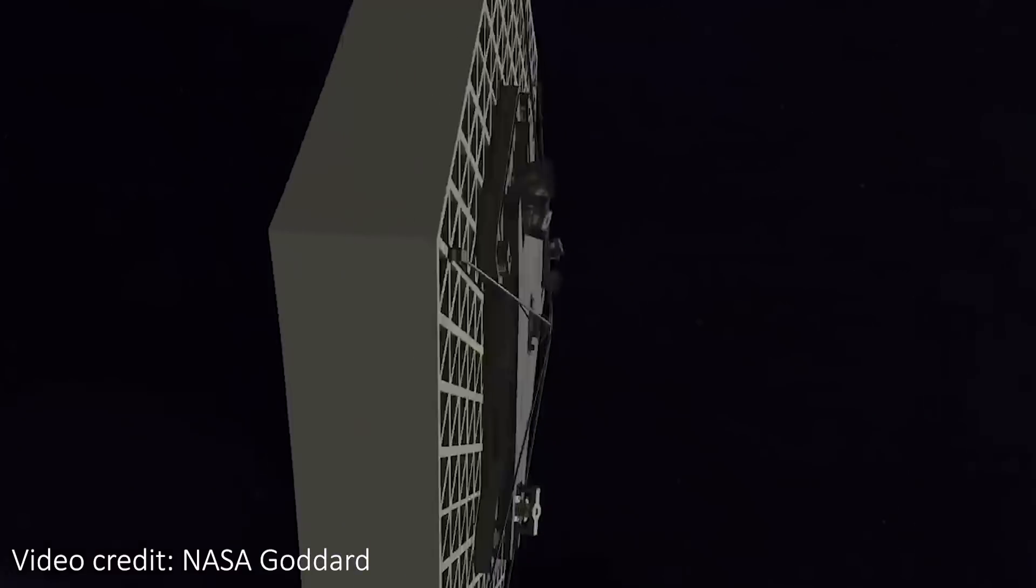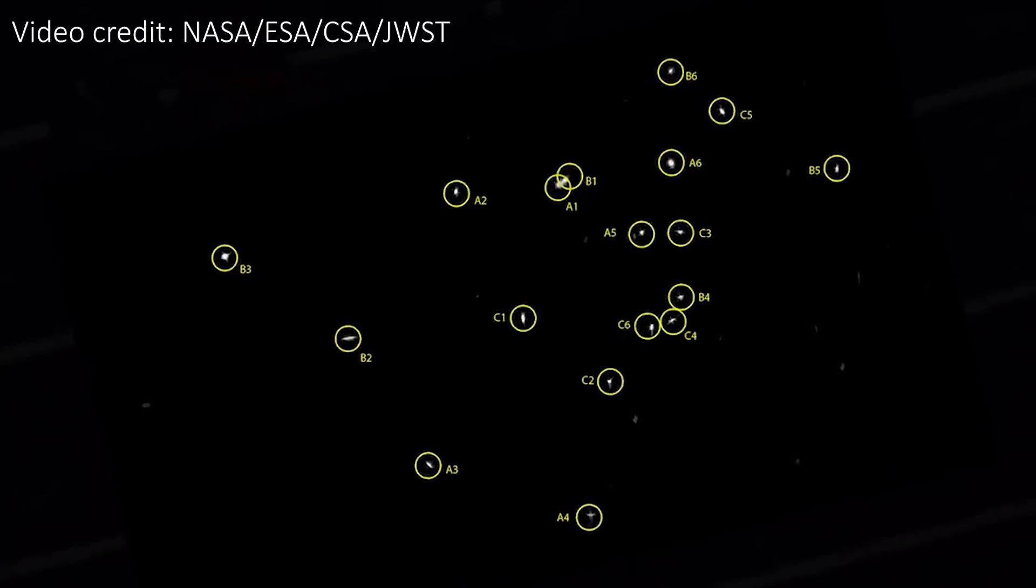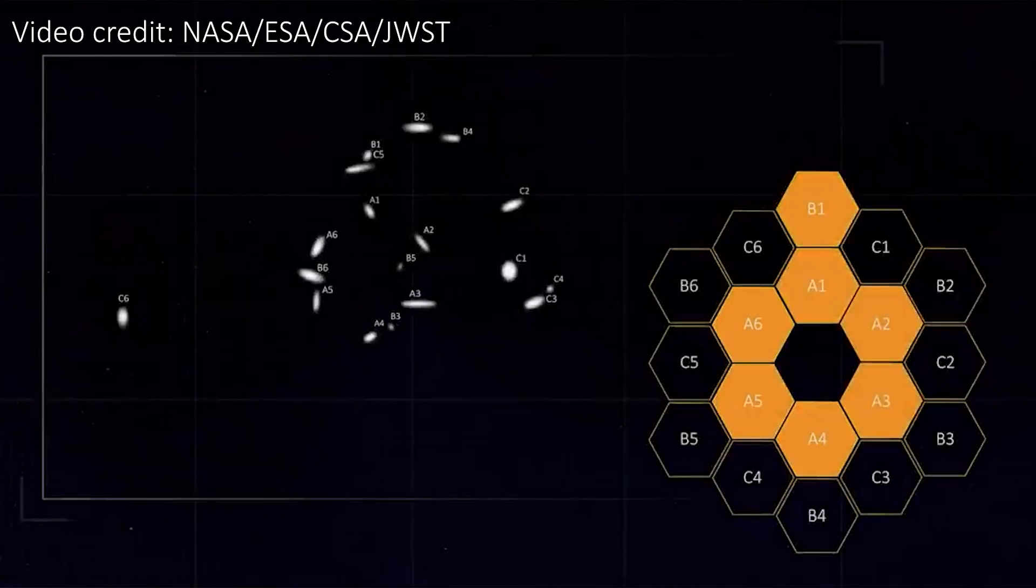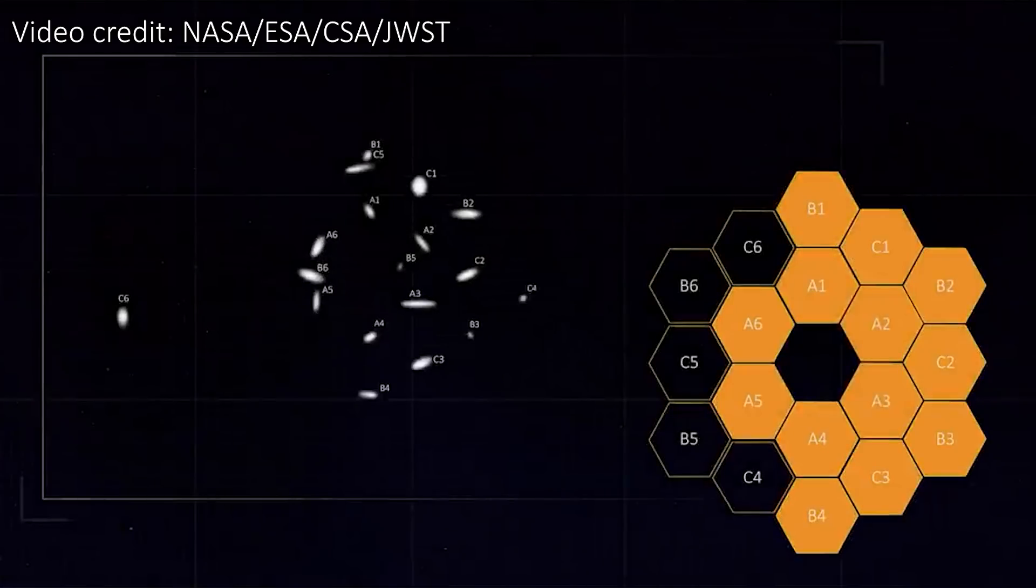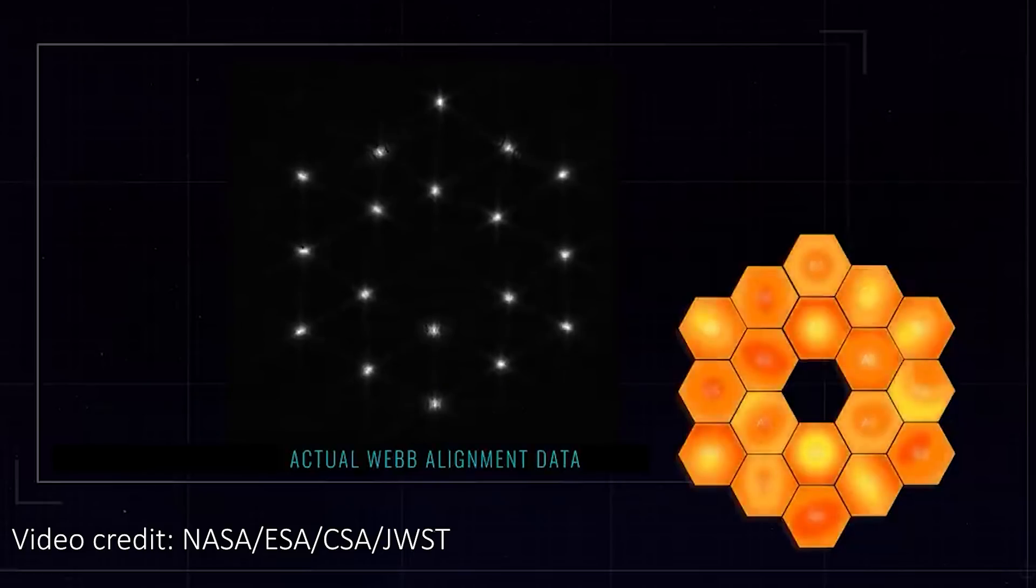The amount they're moving each mirror is absolutely tiny, and they can even flex and warp the surface of each mirror segment a little bit to make sure they absolutely focus the light perfectly. It all started from that image of 18 of the same star. The team identified which of the 18 mirror segments took each image, and then they gently moved and warped each of the segments along with the secondary mirror to remove all of the artifacts in each copy of the star.